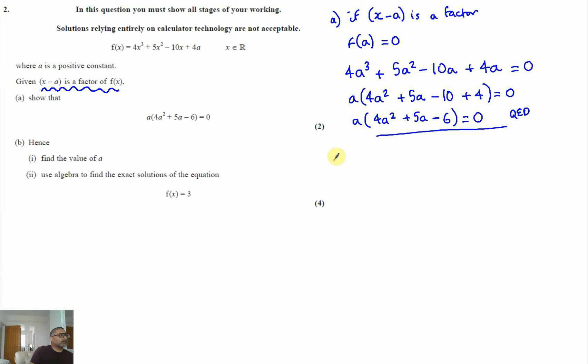Part b, it says hence find the value of a. So if we know that equals zero, if a times 4a squared plus 5a minus 6 is equal to zero. And this means either a is, so thinking about in terms of factorizing here, I think you can factorize this further, so let's do that.